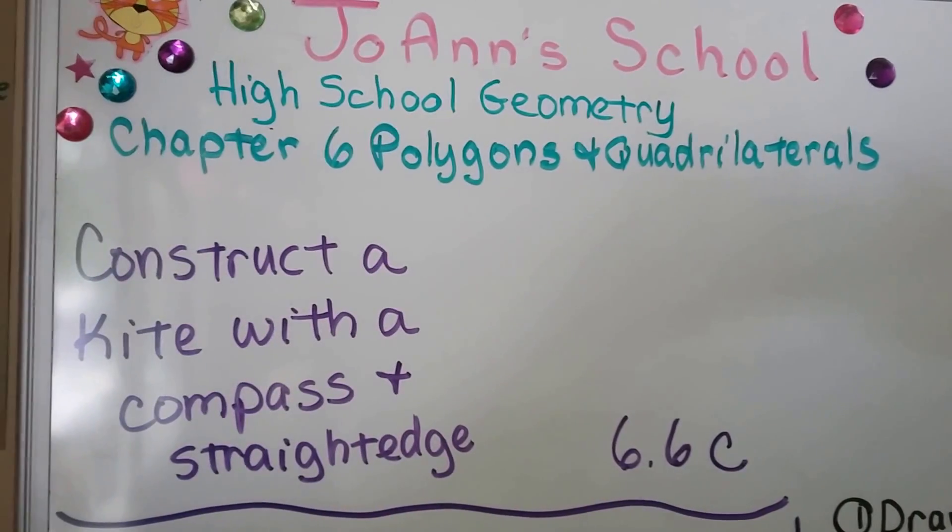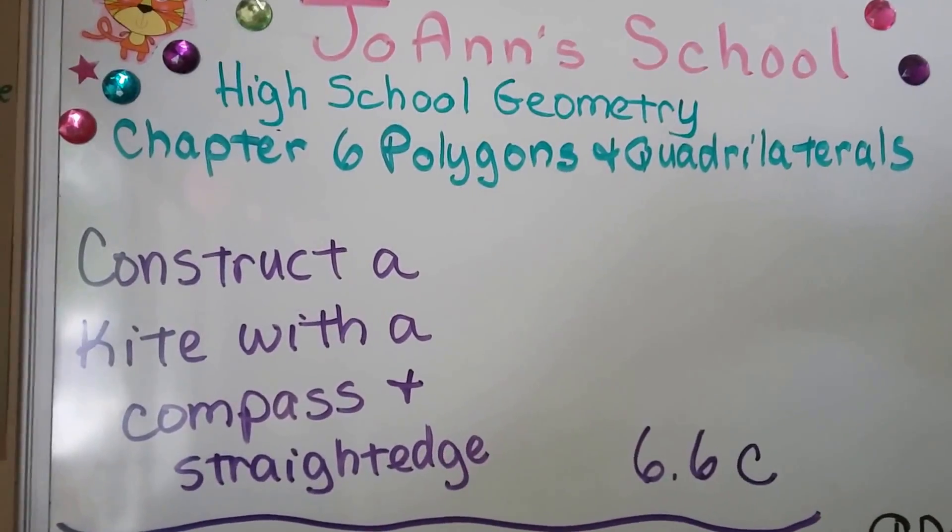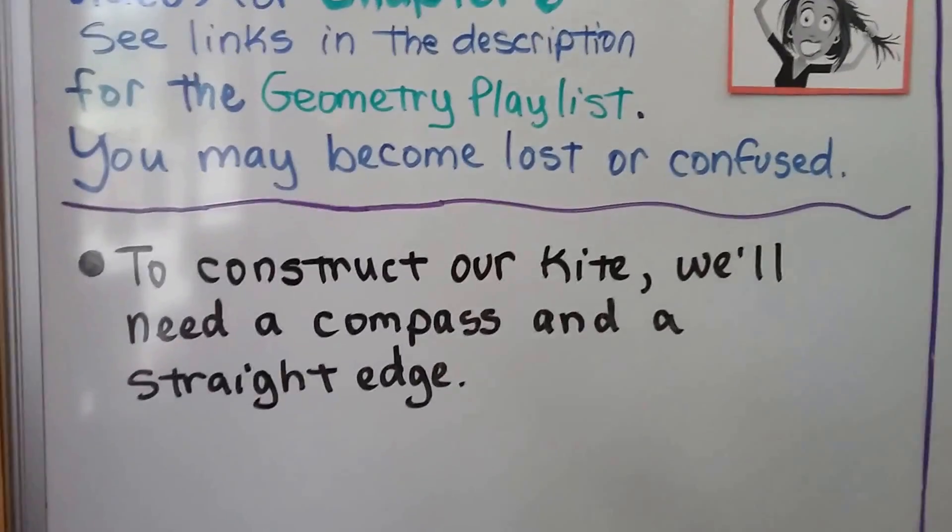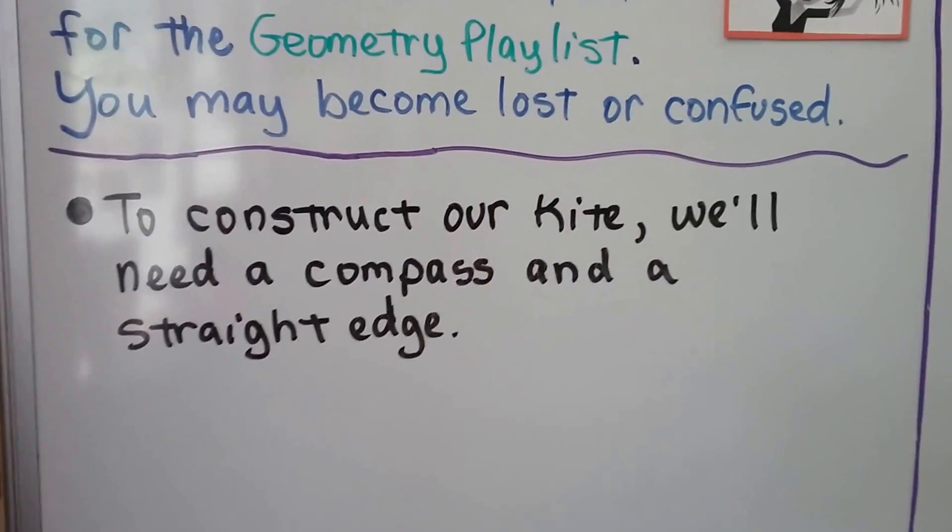This is the last video for chapter 6. We're going to construct a kite with a compass and a straight edge. That's exactly what we're going to need. So I hope you have one.